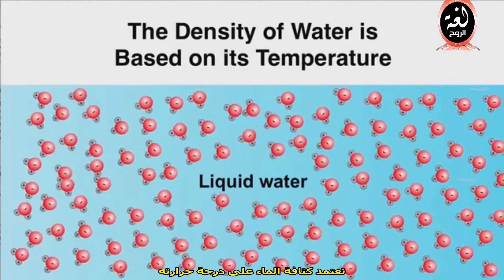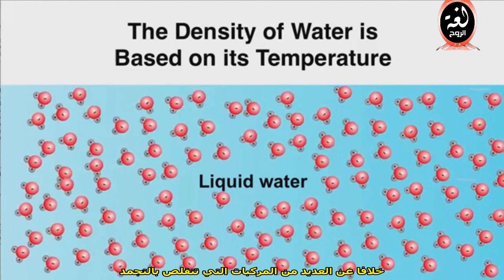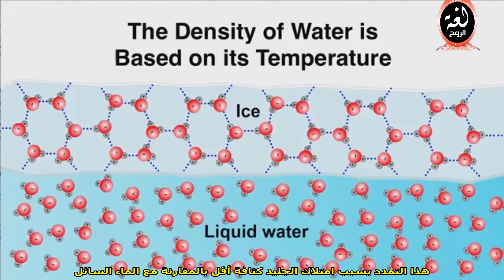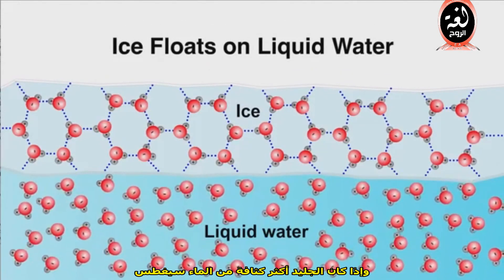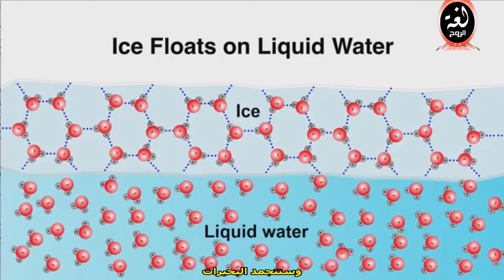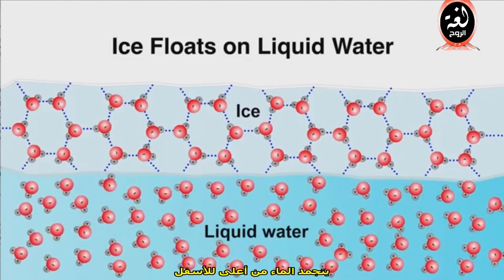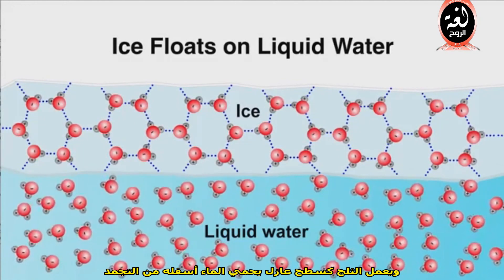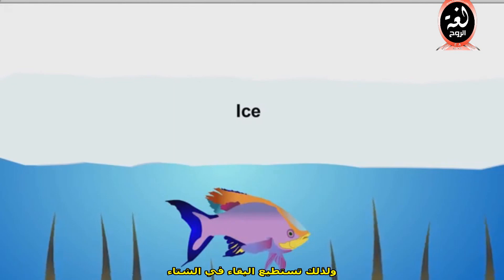The density of water is based on its temperature. However, unlike many other compounds which contract when they freeze, the configuration of the hydrogen bonds in water causes it to expand when it freezes. This expansion causes ice to have a lower density than liquid water, and therefore ice floats on liquid water. If ice were more dense than water, it would sink, and ponds and lakes would freeze solid, making life there impossible. Instead, bodies of water always freeze from the top down. The ice on the surface acts as an insulator to protect the water below from freezing, protecting aquatic organisms so that they can survive the winter.